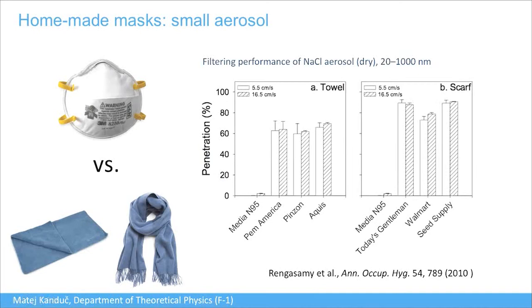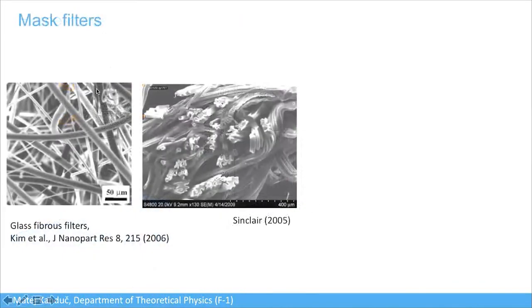For filtering small aerosol particles, homemade masks perform poorly. A study comparing N95 masks with household towels and scarves for sub-micron solid sodium chloride particles showed N95 penetration below 5%, while towels allowed about 60% penetration, and scarves performed similarly or worse. Homemade masks are not effective for filtering small aerosol particles, though they offer some marginal protection.